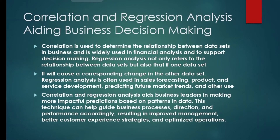Correlation and regression analysis aid business decision making and marketing. Correlation is used to determine the relationship between data sets in business and is widely used in financial analysis to support decision making. Regression analysis not only refers to the relationship between data sets but also examines if one data set will cause a corresponding change in the other data set.